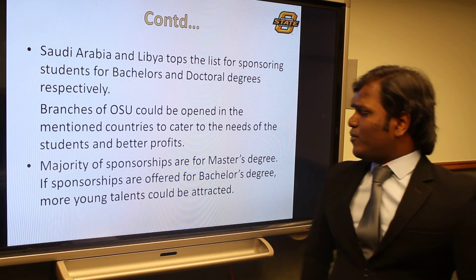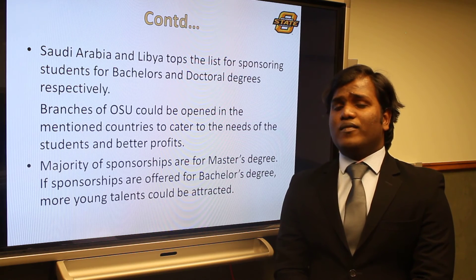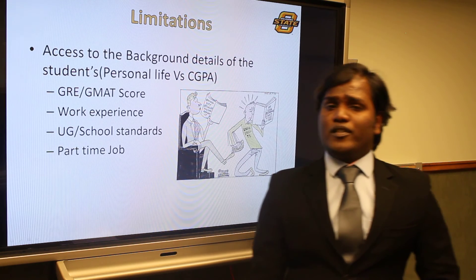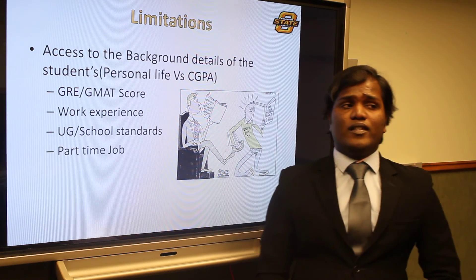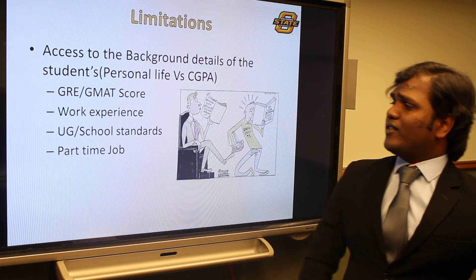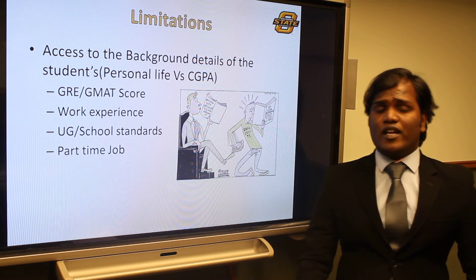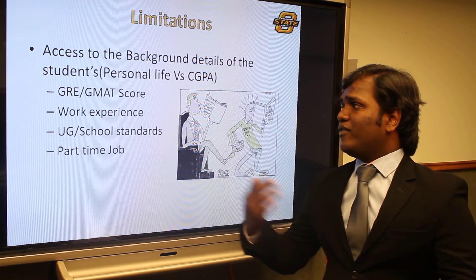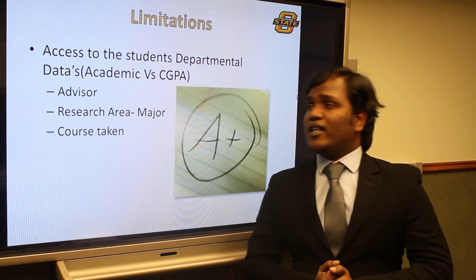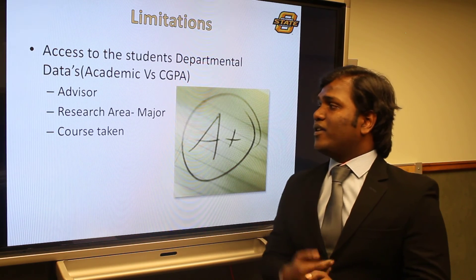Most sponsorships are given to master students, whereas sponsorships to bachelor students are very low. If we consider giving sponsorships to bachelor students, we can attract more people from all over the world. Limitations we had on our project: we had two kinds — access to limitations on personal background of students and access to limitations on their academic standards. If we could know GRE, GMAT scores, work experience, UG school standards and current part-time jobs, we could dig deeper into the analysis of CGPA with respect to personal life. On the academic side, if we knew about their research area, majors and courses taken, we could dig deeper into GPA performance with respect to their current academic standards.